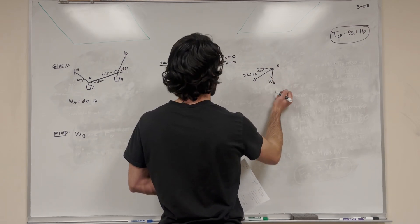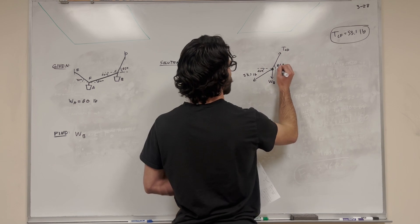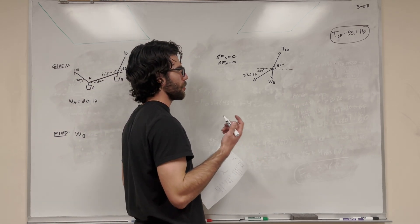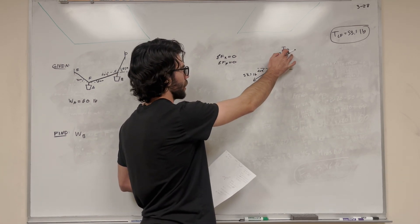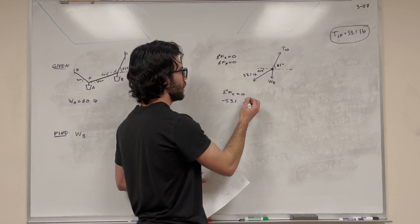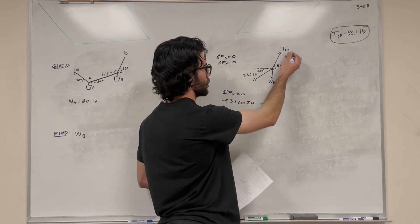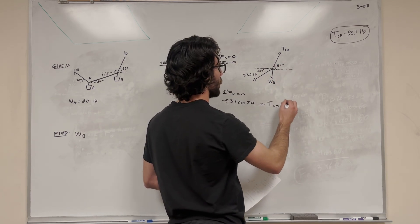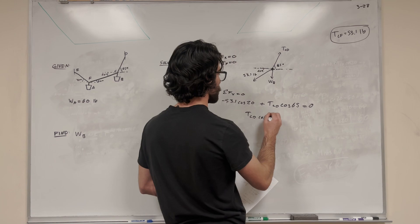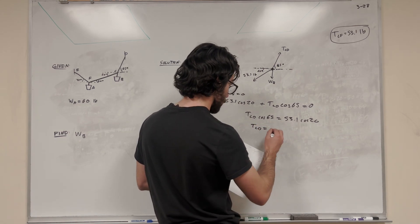At point C we have the weight of B pulling down, and tension CD at a 65-degree angle. Let's solve sum of forces X = 0: negative 53.1 times cosine of 20 (the adjacent X component pulling left) plus tension CD times cosine of 65 equals zero. Moving terms over: tension CD times cosine 65 = 53.1 times cosine 20. Dividing by cosine 65, tension CD equals 118 pounds.